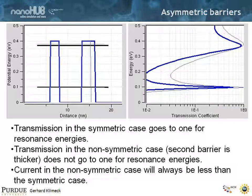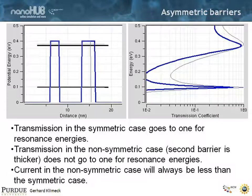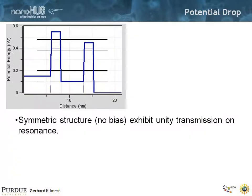So the point is: if you inject current into a device like this that's asymmetric, your current is going to be smaller than in the symmetric structure, because you're effectively integrating all of this resonance. And by the way, if you apply a voltage, that implies asymmetry.